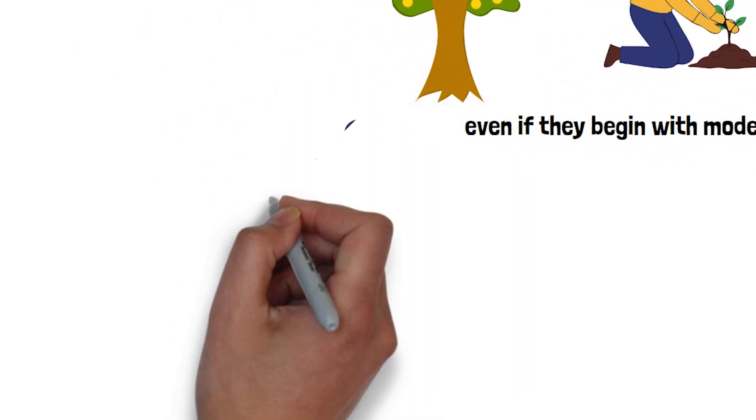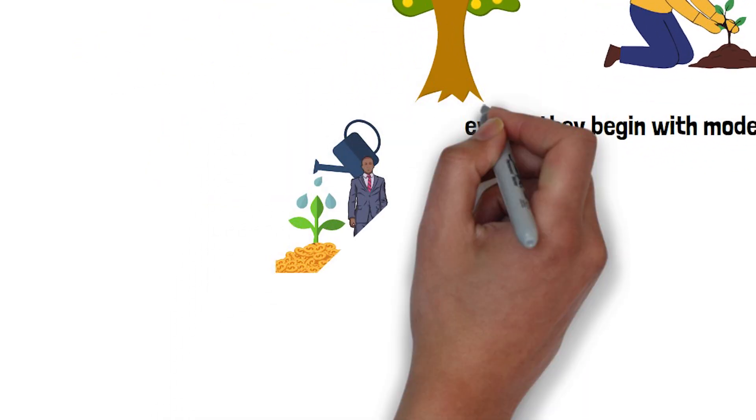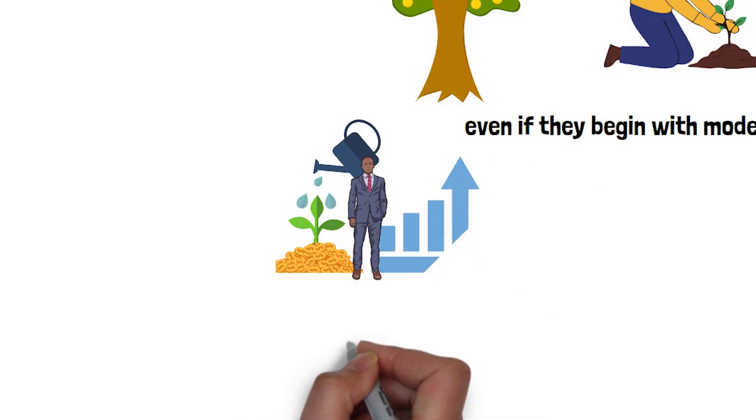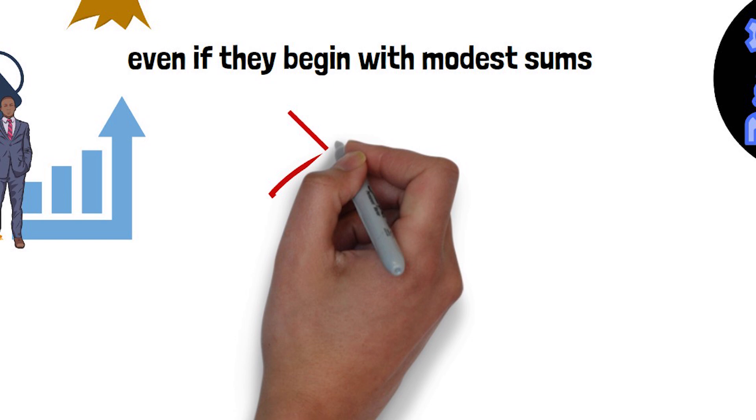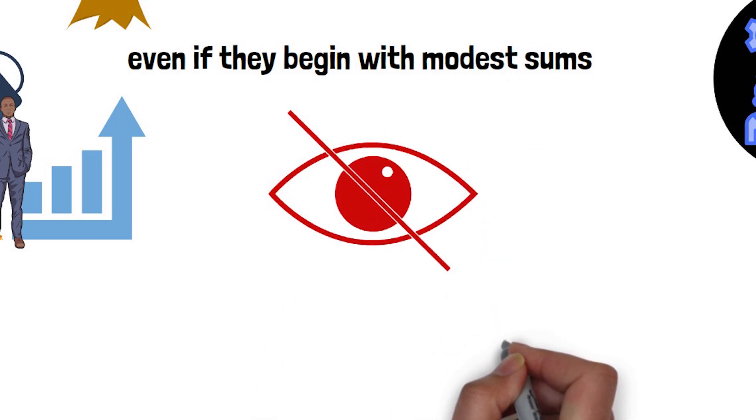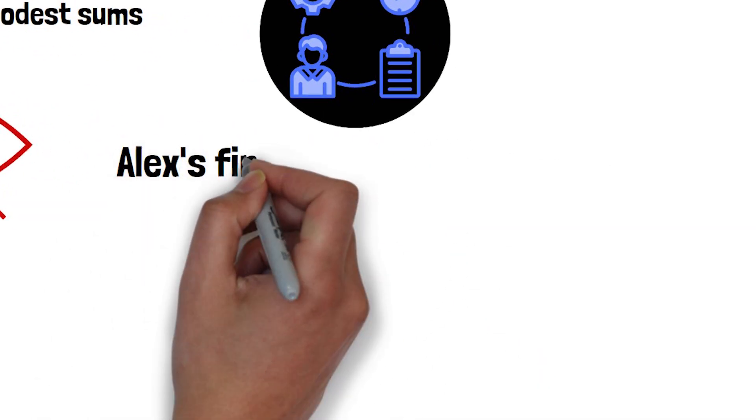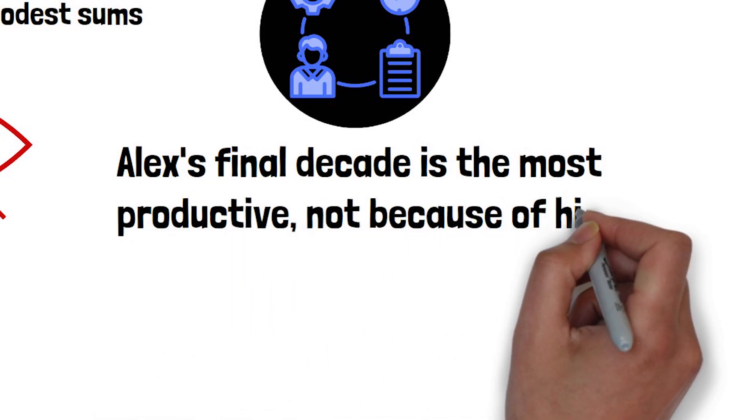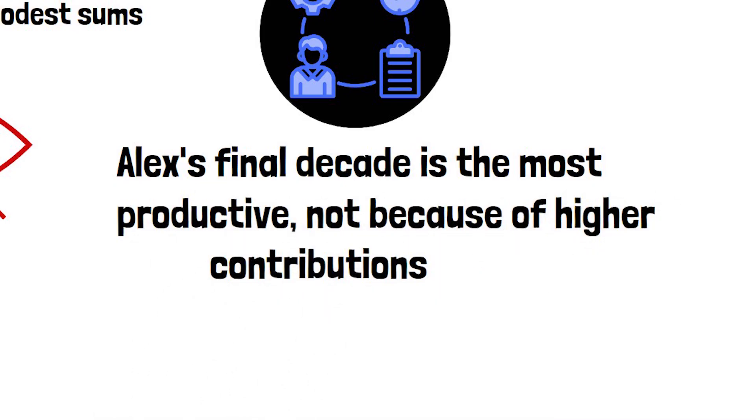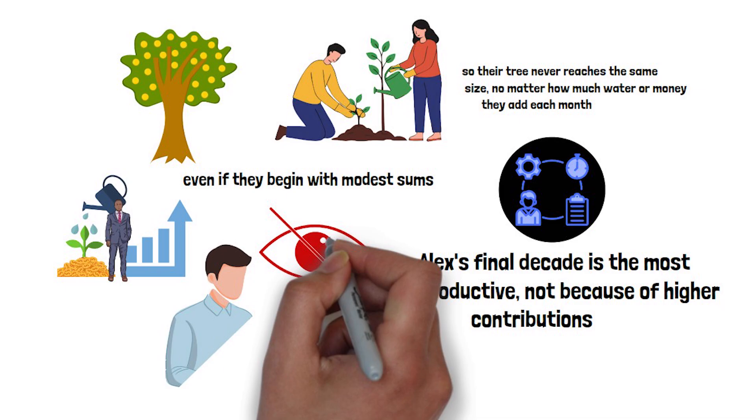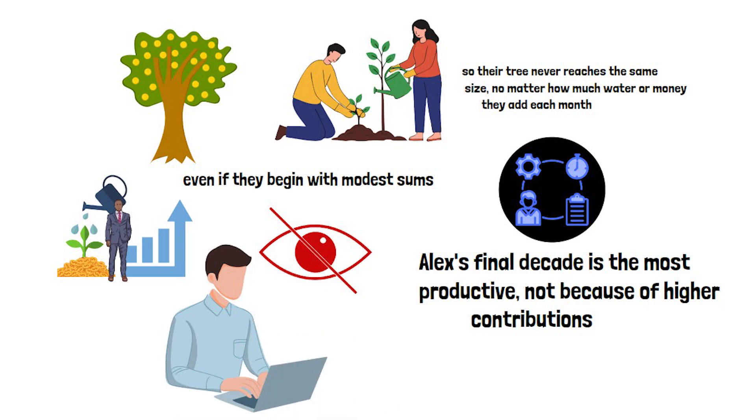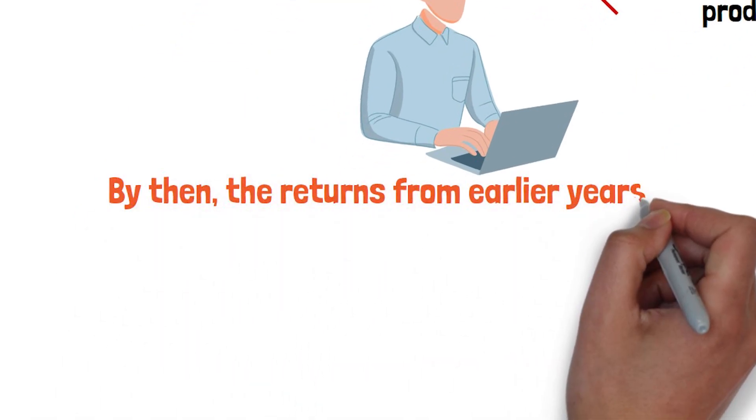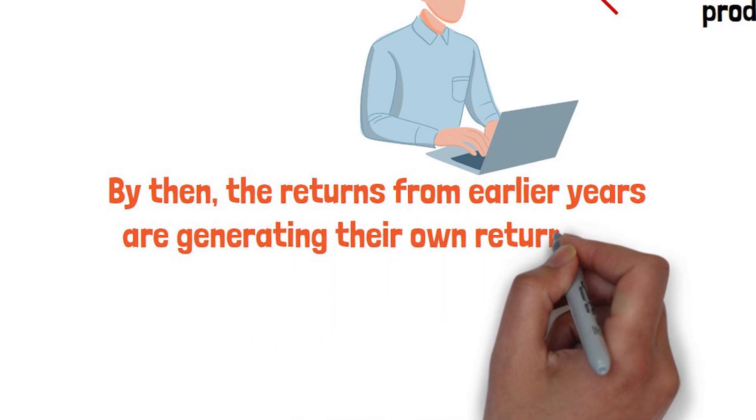It stacks the deck in favor of the early starter, even if they begin with modest sums. Compounding's exponential curve means the largest jumps in wealth happen near the end of your investment timeline, when your balance is at its biggest. You don't see it in the early stages, which is why it's so easy to underestimate. Alex's final decade is the most productive, not because of higher contributions, but because the machine has already been quietly working for 20 years already. By then, the returns from earlier years are generating their own returns.